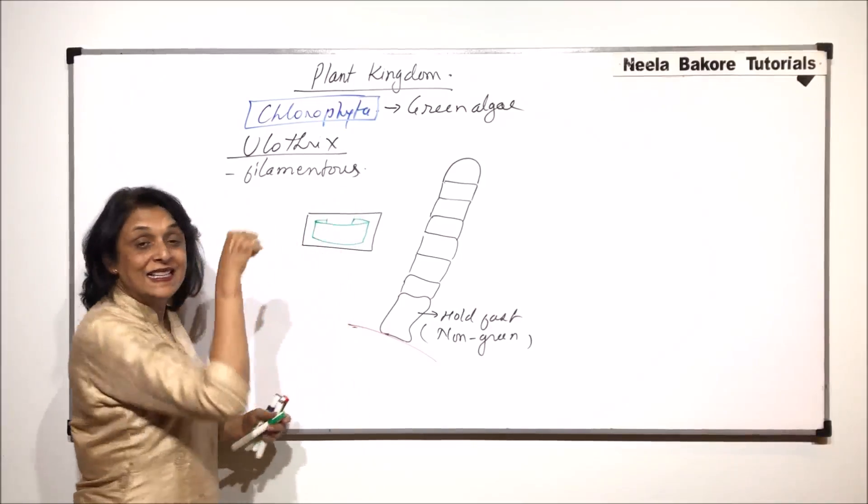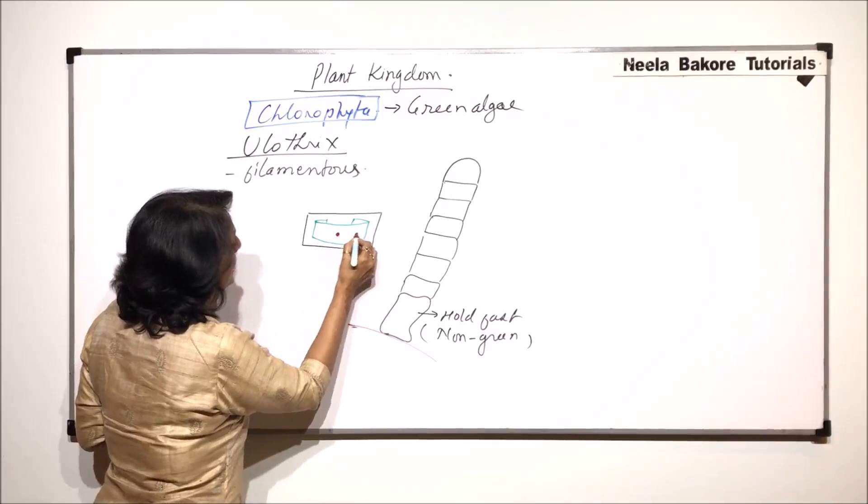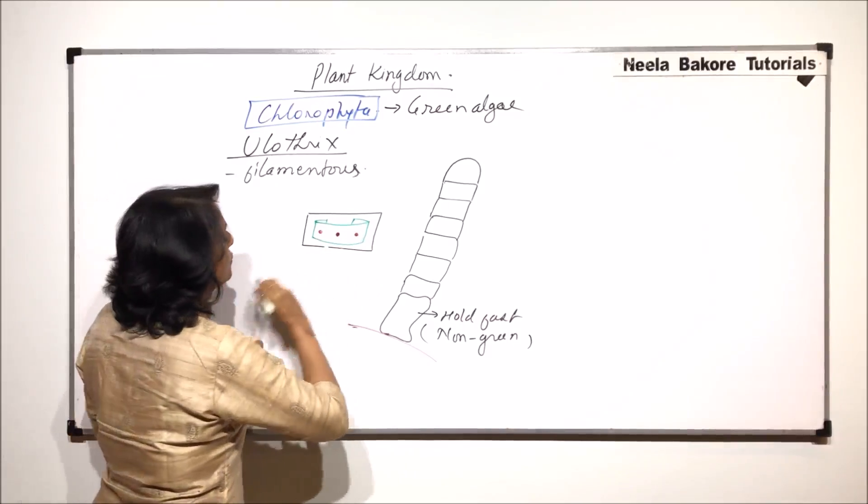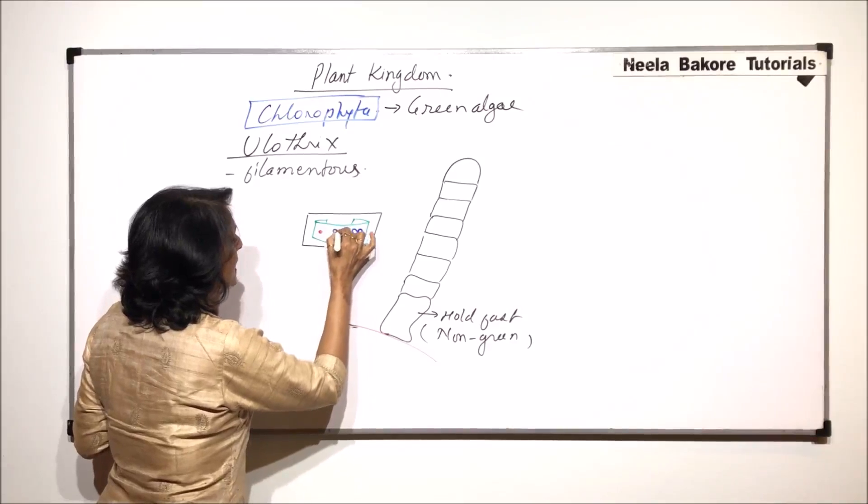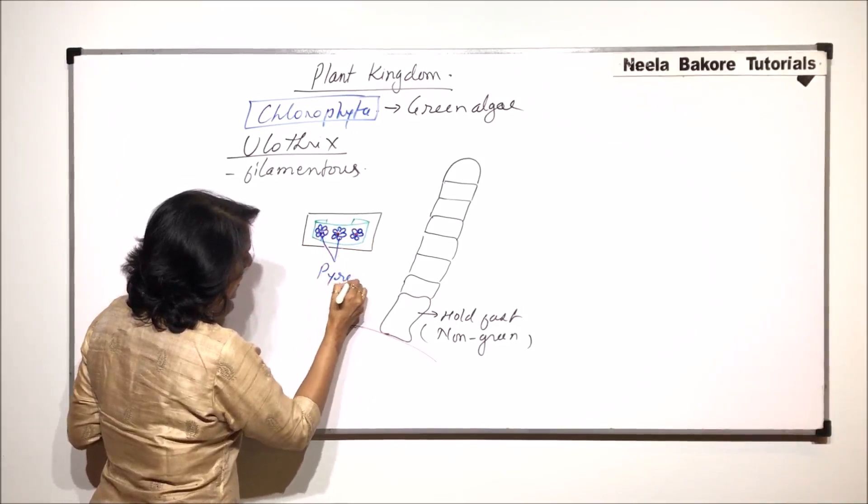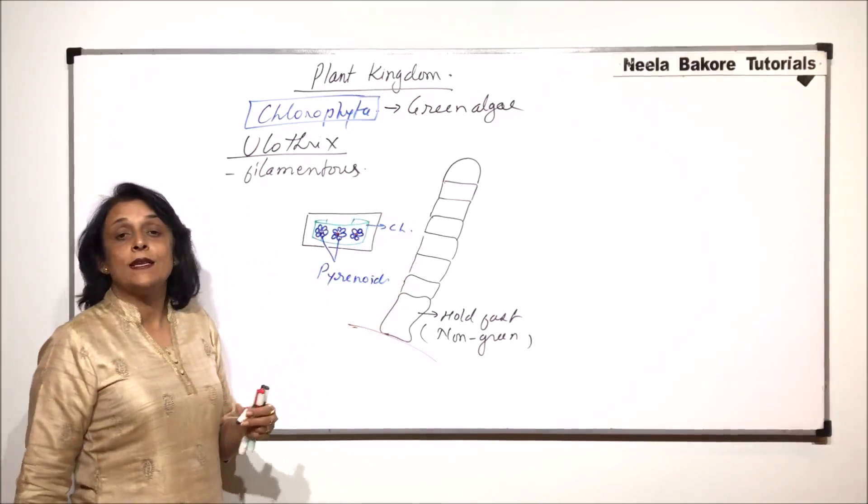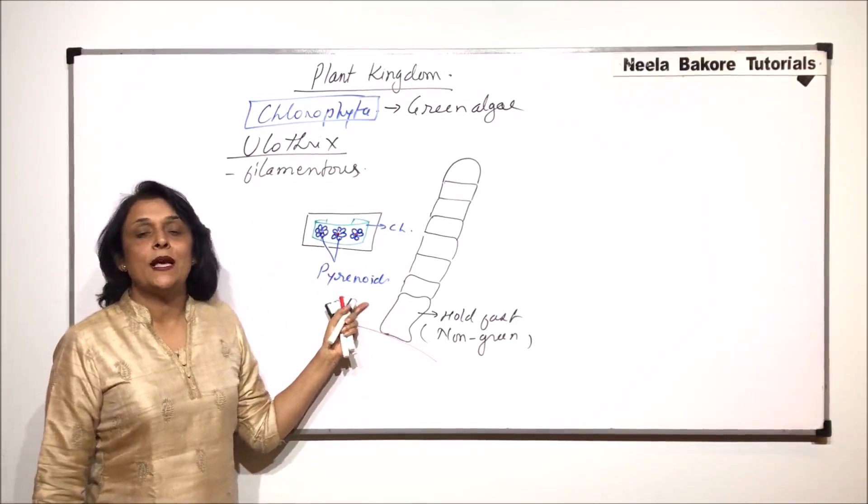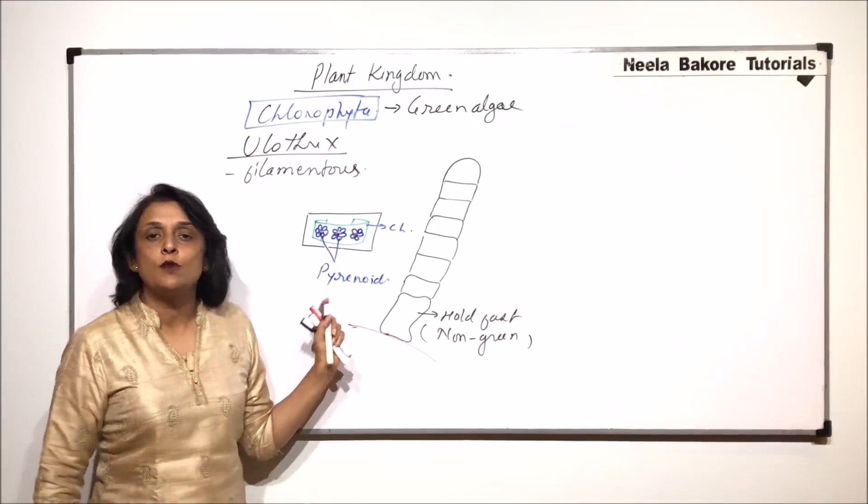So nucleus would be somewhere here inside which is not visible to us. Chloroplast and on this chloroplast we find few pyrenoids. Pyrenoids means again that reserved food in which there is a protein core and which is surrounded by the starch grains. So there are these pyrenoids. This green structure is the chloroplast. So there is a single girdle-shaped chloroplast which is present and each chloroplast has one to five and that's why we normally say that there are a few pyrenoids which are embedded.